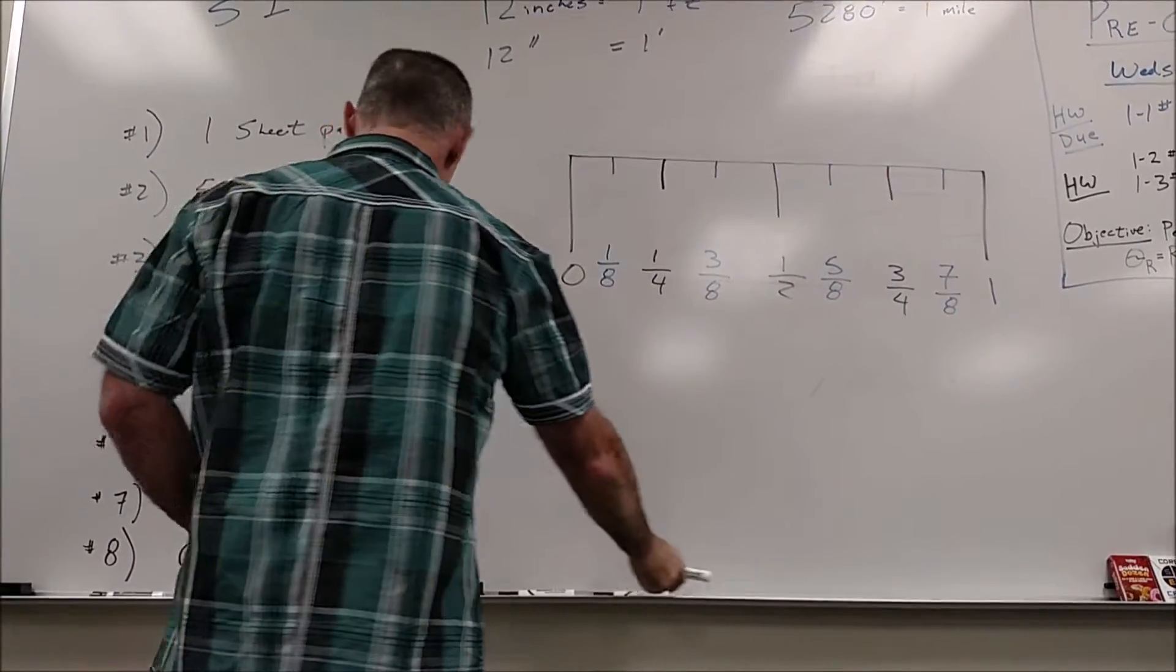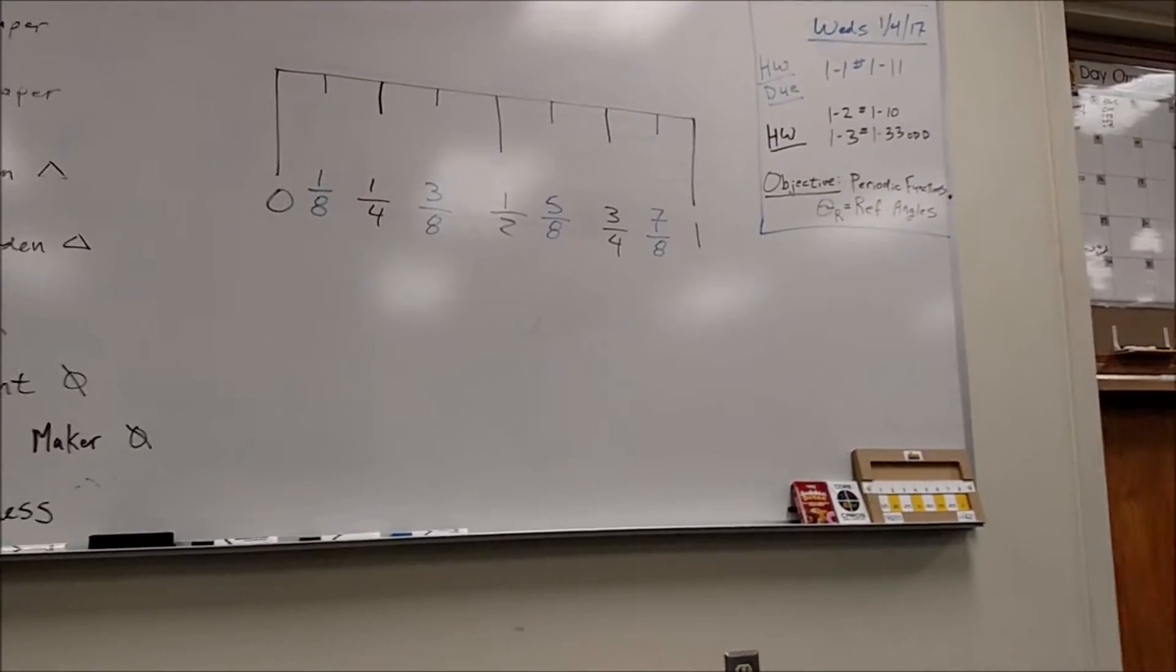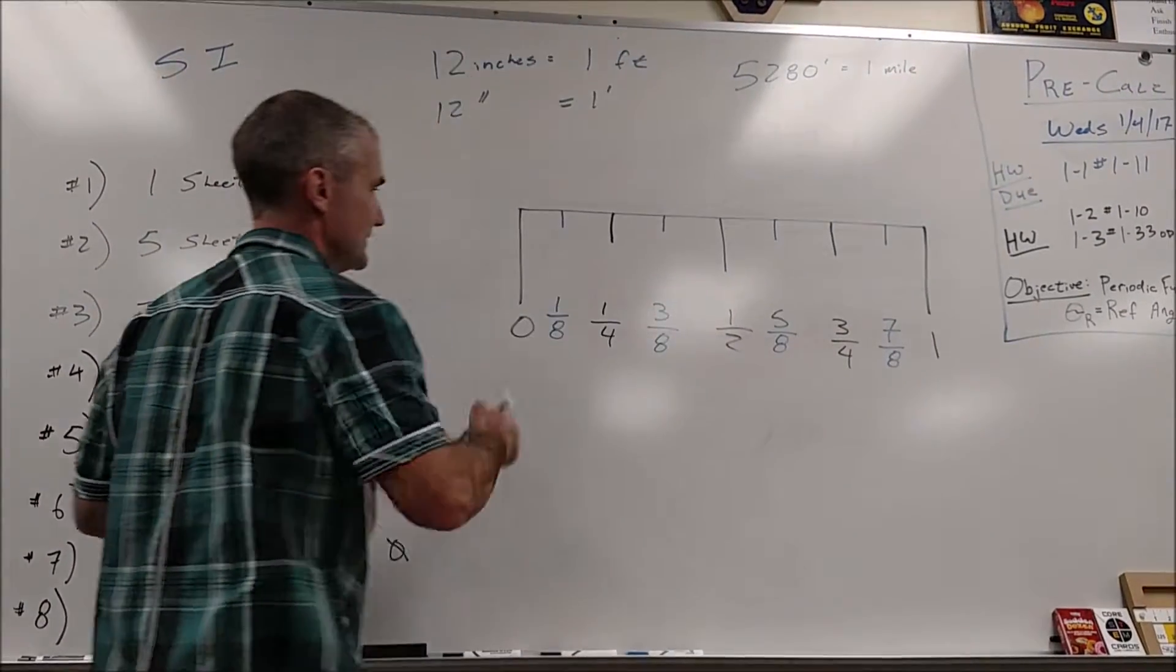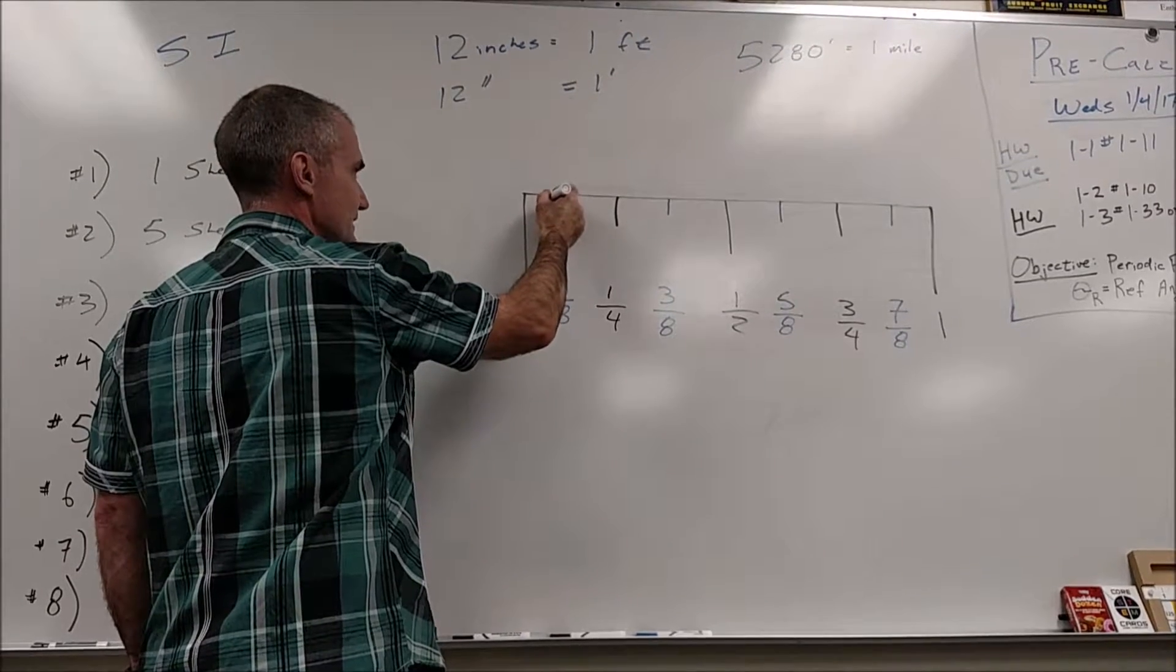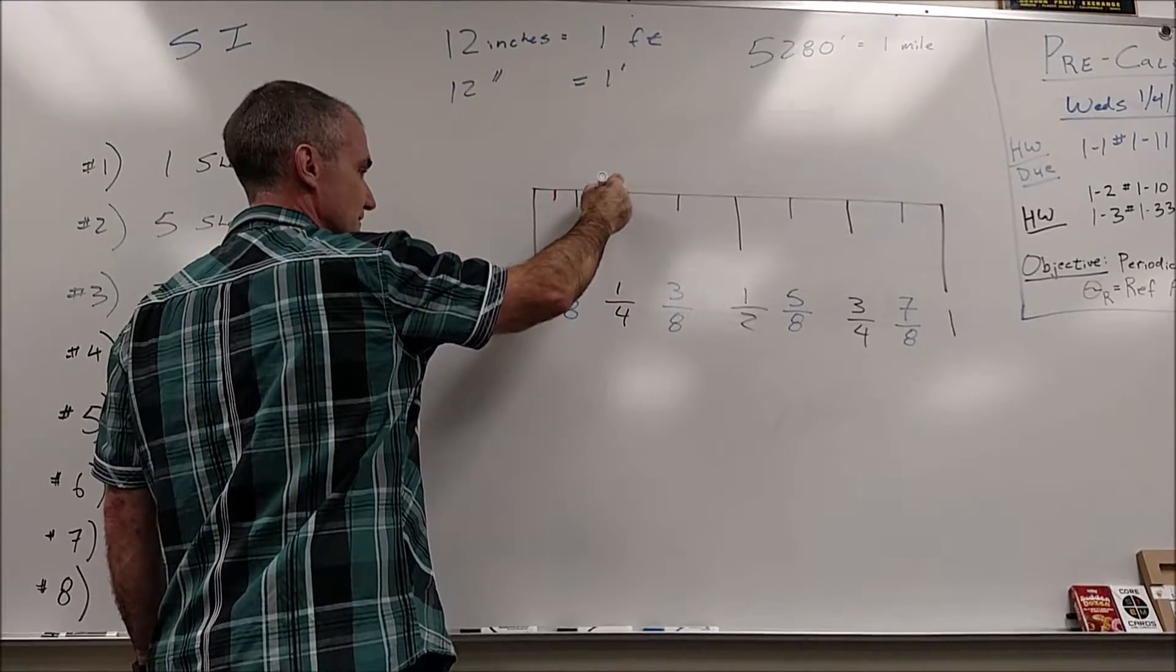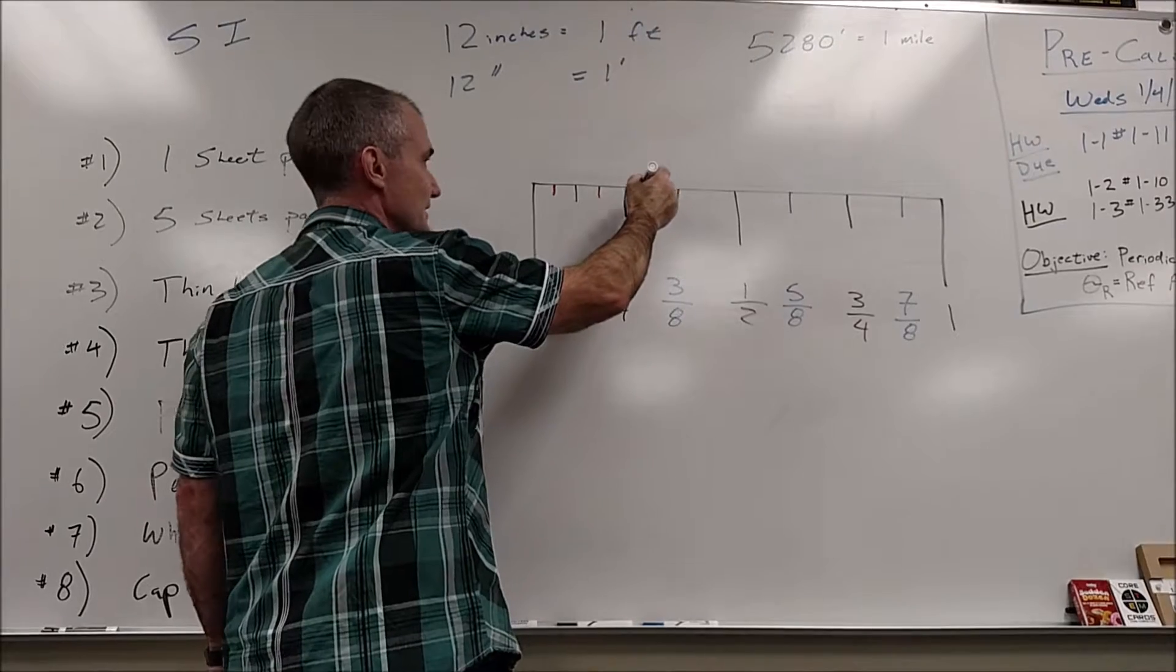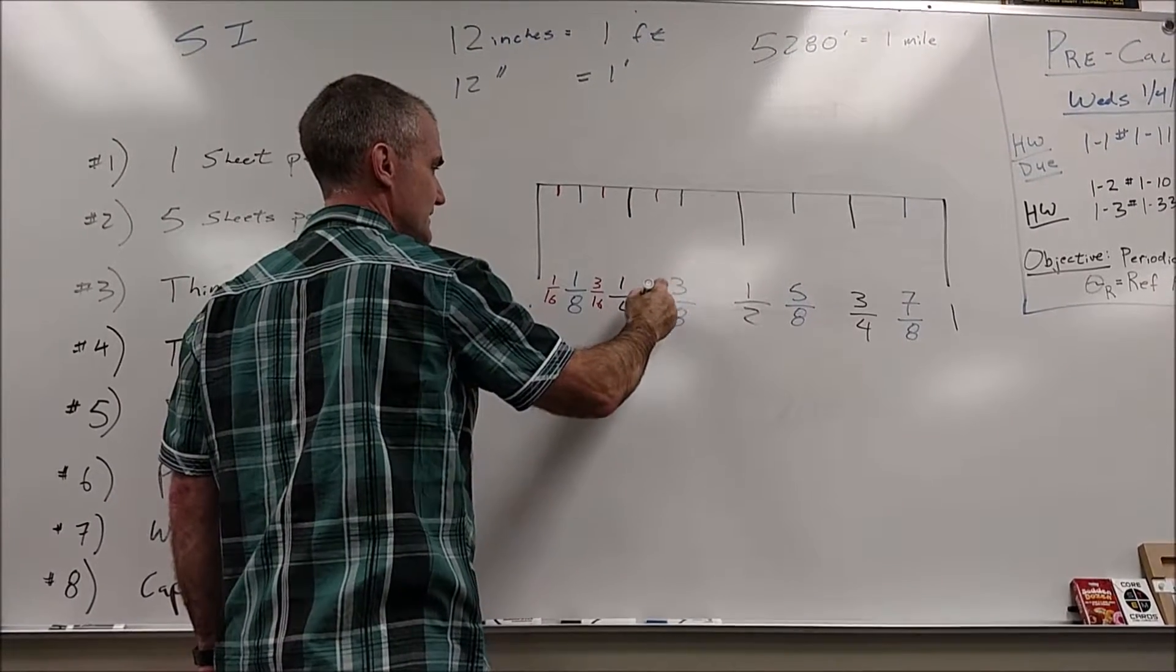Okay, so from eighths I cut those in half again, and my tick line is that much shorter than this mark. Hannah, what's this one? Half of an eighth. That'd be one sixteenth. One sixteenth, two sixteenths. Kayla? Three sixteenths, four sixteenths. Vic? Five sixteenths.